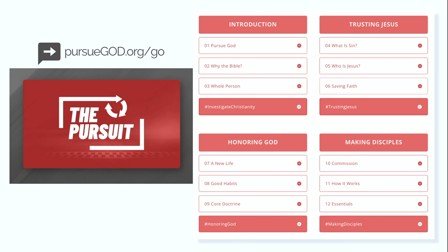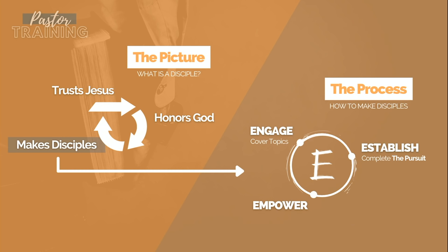You'll also talk about honoring God and the importance of good spiritual habits and solid doctrine. And that's where you'll learn how to make disciples. Once you've gone through the Pursuit with somebody, you've established them in full circle faith. Now you'll be ready for the third thing, which is to empower them — helping them connect to the next person who needs someone to disciple them. And the process can repeat, where every disciple maker can engage someone, establish them in the faith, and empower them to go help the next person.